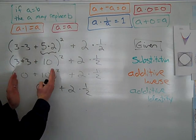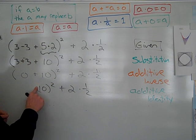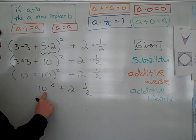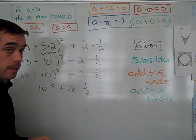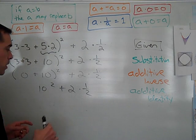I am completely finished with all operations inside of the parentheses. I could actually drop the parentheses at this point. They're no longer needed since all operations have been operated on. And I am left with 10 squared plus 2 times 1 half.